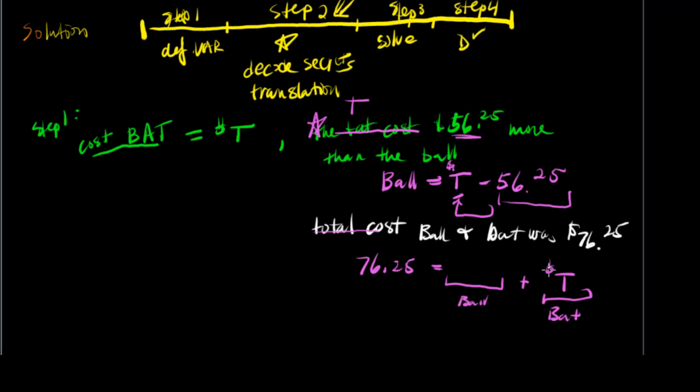Bat, where I already assumed is T. And the ball from earlier, we know it's whatever the bat was, and then we take $56.25 less of that. So the total cost is $76.25, that's equal to the ball plus the bat.